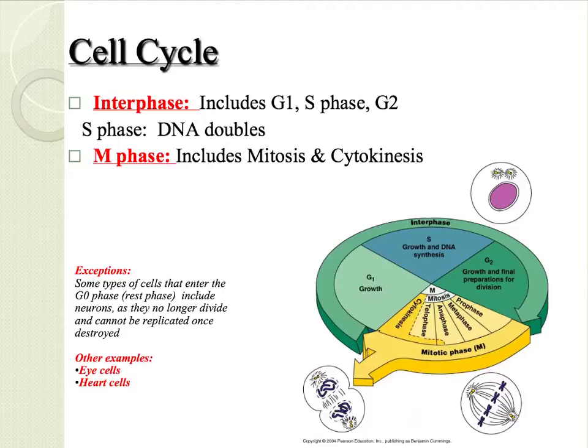Certain cells such as eye cells, heart cells, and neurons enter a special phase called G0. These cells will no longer be able to divide or be replaced once they are destroyed.